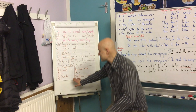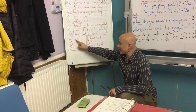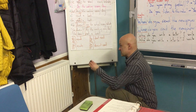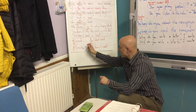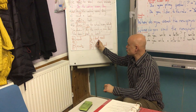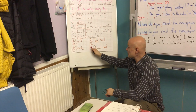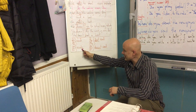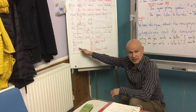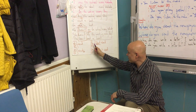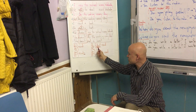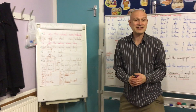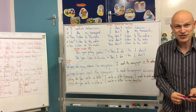I did a little summary: I, you, we, they read. He, she, it reads. I, you, we, they don't read. He, she, it doesn't read. So in the positive, the change is for he, she, it. In the negative: I, you, we, they don't — he, she, it doesn't. This is what changes. We'll practice this tomorrow in Conversation Class. Thank you.